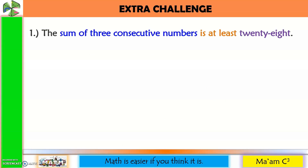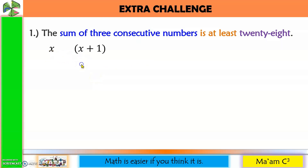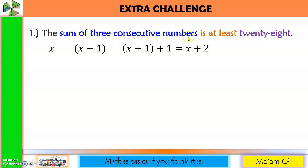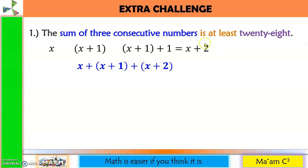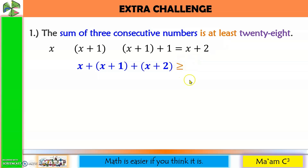Extra challenge: the sum of three consecutive numbers is at least 28. If the first number is x, the next is x + 1 and the one after is x + 2. So we write x + (x+1) + (x+2) ≥ 28. Since 28 is the minimum, the sum could be equal to or greater than 28, so we use greater than or equal.